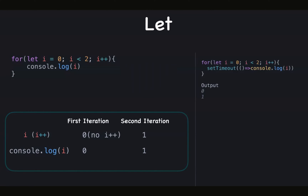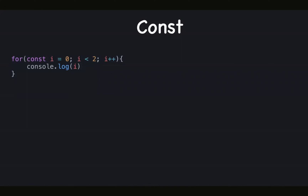Let's check the same setTimeout example but with let. Now it gives zero and one, because we get two separate i declarations and it's block-scoped. const is similar to let, but with one difference.